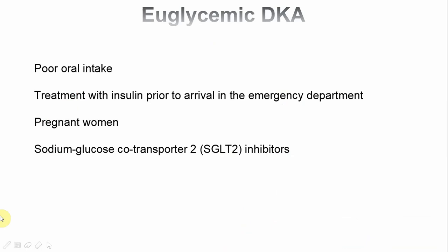An important scenario is euglycemic DKA, where blood sugar is normal yet the patient still has diabetic ketoacidosis. Four conditions to consider: poor oral intake, patient taking insulin just before arriving at hospital, pregnancy, and patients on sodium-glucose co-transporter 2 (SGLT2) inhibitors — a novel diabetes medication that can itself cause euglycemic DKA.